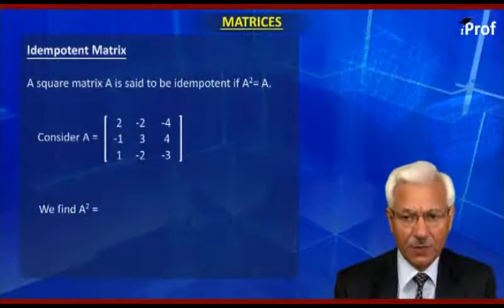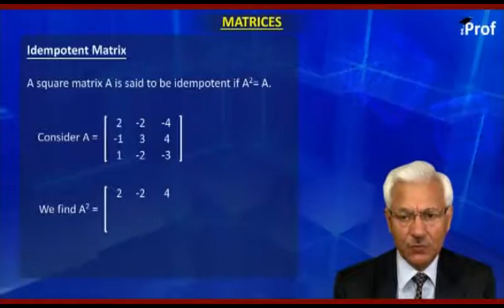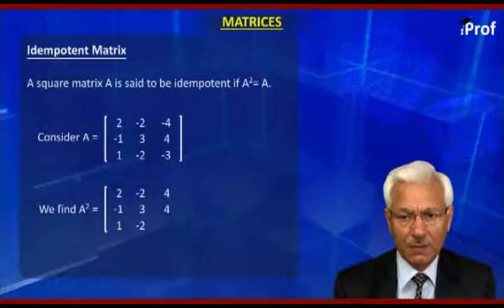That is the product of A and A: [2, -2, 4; -1, 3, 4; 1, -2, -3] as the first matrix.